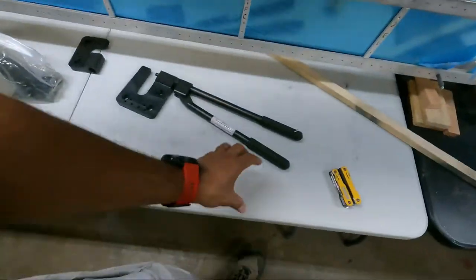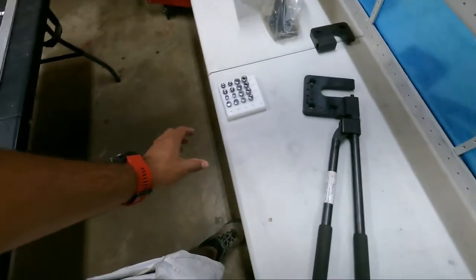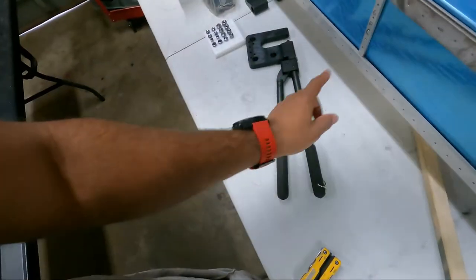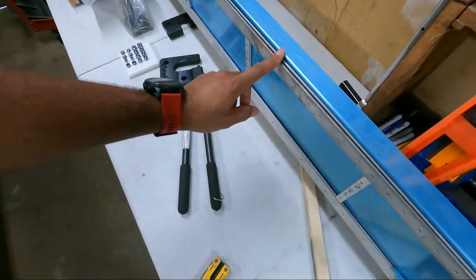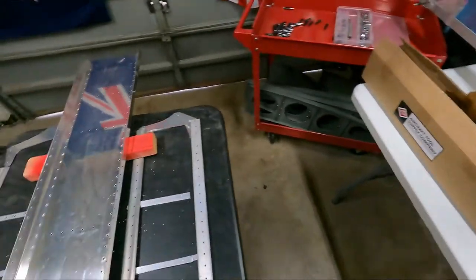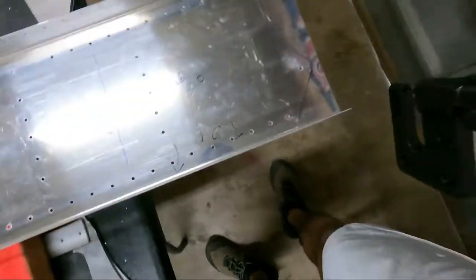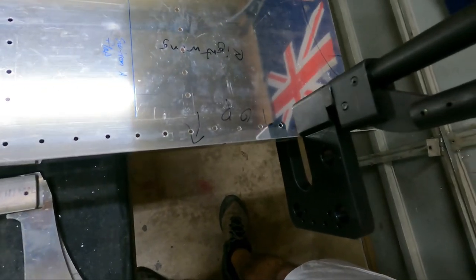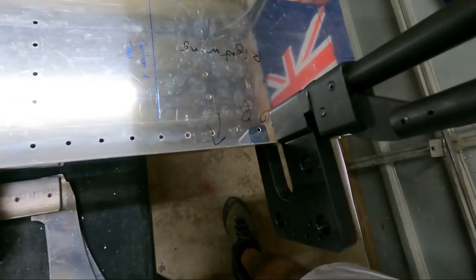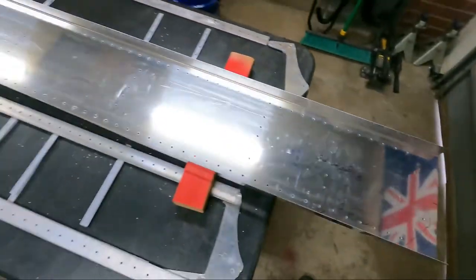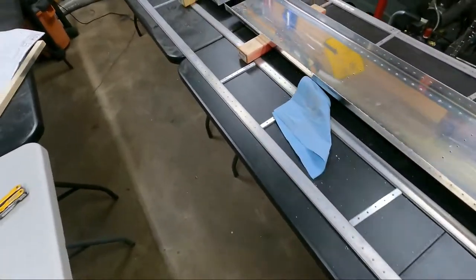I've got my rivet squeezer. I'll attach that to something later. I'm going to use this to do the wing spars, just so I can have a little bit more control over it. That should fit. Let's see. Does it? Just barely. We'll be able to take care of that. Sweet.